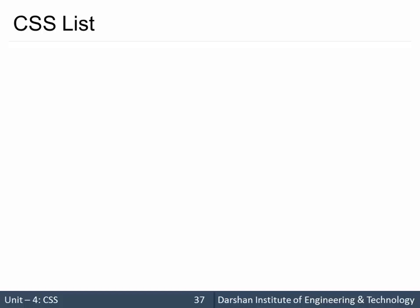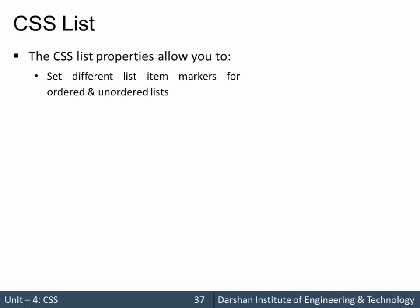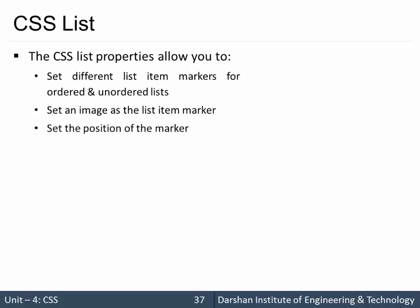Hello everyone. In today's session we are going to discuss CSS list properties. A CSS list property allows users to set different markers for ordered and unordered lists. In CSS, there is no difference between ordered and unordered as there is in HTML with ul and ol. We can set an image instead of markers, and we can also set the position of that marker — inside or outside.